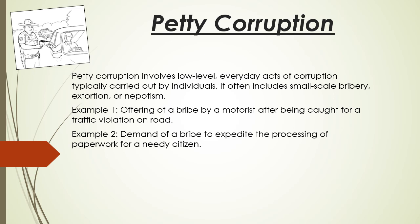The first form of corruption is petty corruption. Petty corruption involves low-level, everyday acts of corruption, typically carried out by individuals. It involves small-scale bribery, extortion, or nepotism. First example: offering a bribe by a motorist after being caught for a traffic violation. Second example: demanding a bribe to expedite the processing of paperwork for a needy citizen.